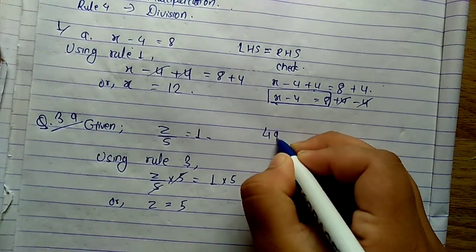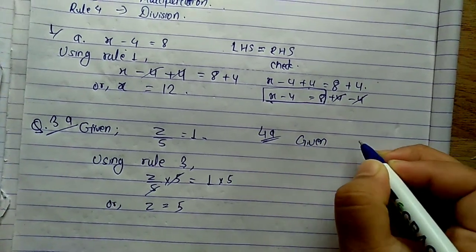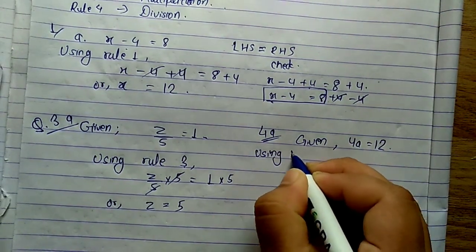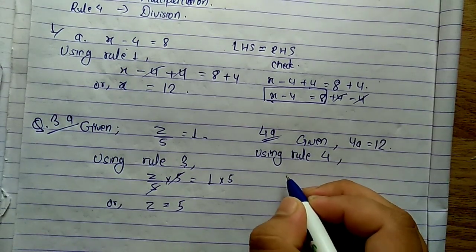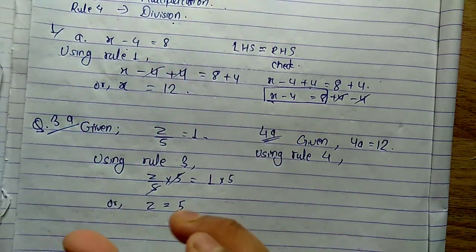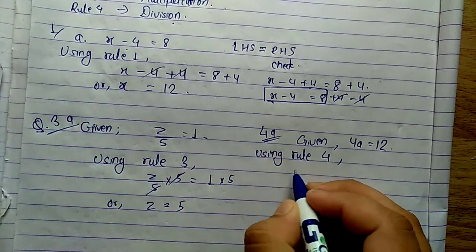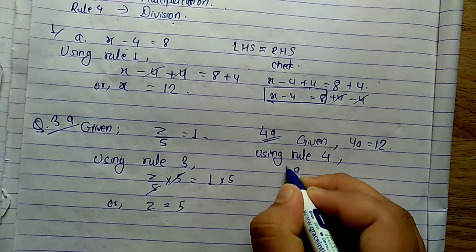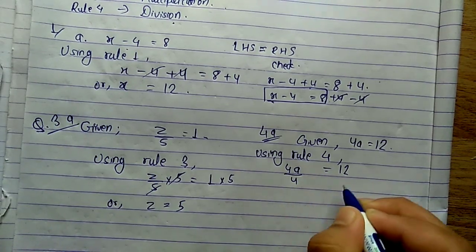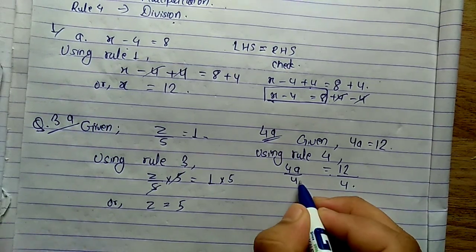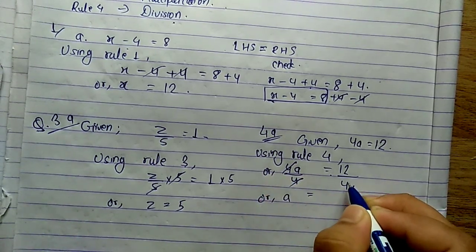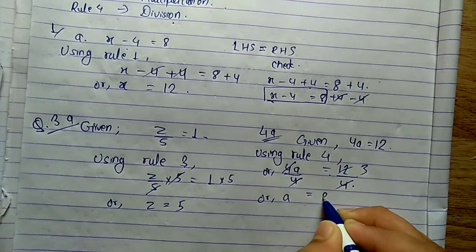Now let's check Rule 4 with question 4a. Given: 4A equals 12. Using Rule 4, which means division, we divide both sides by 4 — the number next to the variable. The numerator and denominator with the same number cancel out, leaving A equals 12 divided by 4. Since 3 times 4 is 12, the answer is A equals 3.